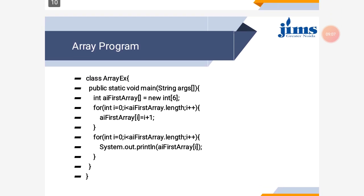In this program, we can see there is a class and an array A1 has been created using the new keyword with size 6, so it can store 6 values of the same kind. In a for loop, we are using the length property — array name dot length will count how many elements are in the array and we initialize here. A[i] equal to i plus 1 is the value being allocated to each location. Similarly, in a for loop for writing, we can print that value using indices.